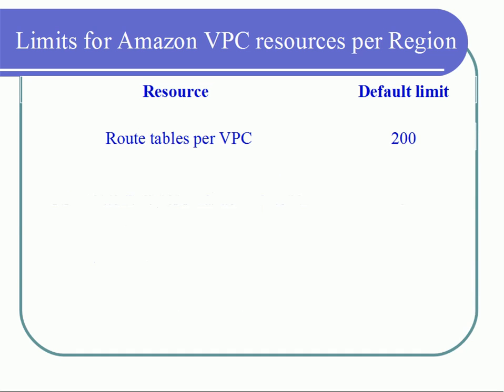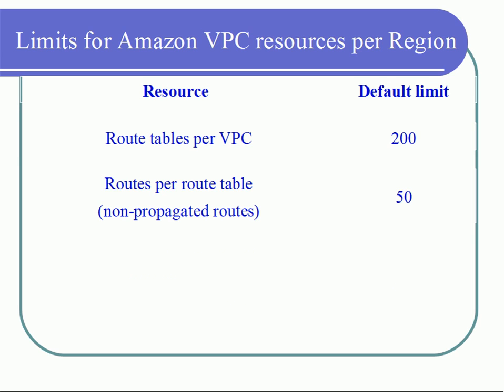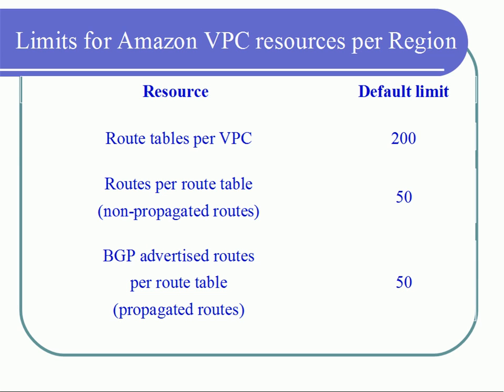For routing tables, you can create up to 200 routing tables per VPC, and you can add up to 50 routes in each routing table — that is, each routing table in a VPC can have up to 50 rules. BGP advertised routes per table can be up to 50.